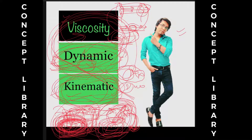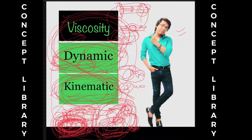So dynamic viscosity of honey is more, but kinematic viscosity of mayonnaise is more. If you don't know what mayonnaise is — it's that cream we use on pizza, burgers, and similar things. Also, honey is a Newtonian fluid and mayonnaise is a non-Newtonian fluid — you can check other videos for more on that. I hope you got the physical feel of dynamic viscosity and kinematic viscosity. Thank you so much.